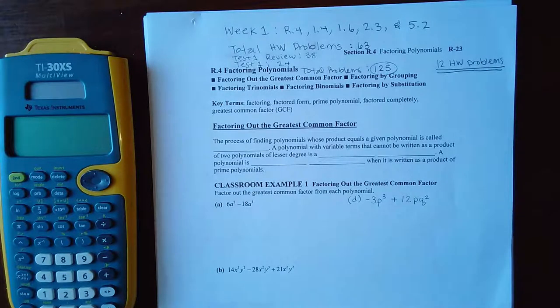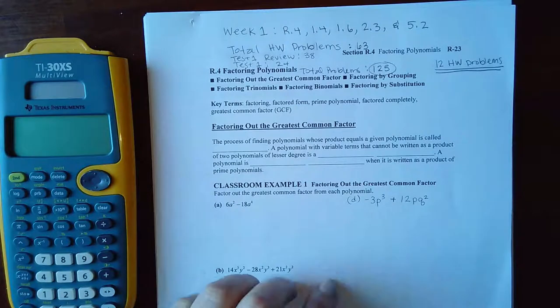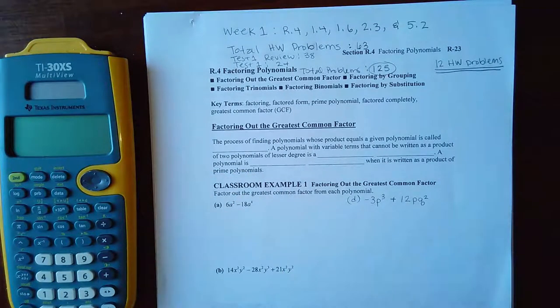If you include everything—all the problems on that basic assessment, all of your homework problems, all of your reviews, all your tests—you're going to be completing about 450 math problems for the next three weeks. If you break that up, it's about 150 problems per week.